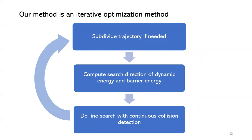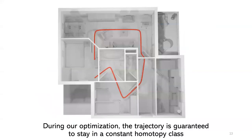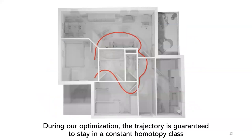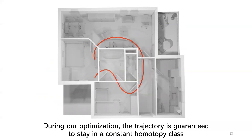Our method is an iterative optimization approach. In each iteration, we first subdivide the trajectory if needed, then compute a search direction for dynamic energy and barrier energy — the direction is always computed by Newton's method. Finally, we do line search with continuous collision detection so we can keep the trajectory safe at all times. During optimization, the trajectory is guaranteed to stay in a constant homotopy class, and since it is always safe, in some applications we can early-stop to get a feasible trajectory.